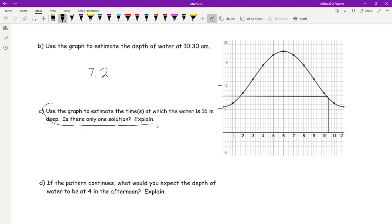But then we can also use the graph to estimate the time the waters at 16 meters. So I could go to 16 meters and draw a nice straight line across. Right here and right here is when it's 16 meters, and then go down. That's at 4:30 a.m. and 7:30 a.m.